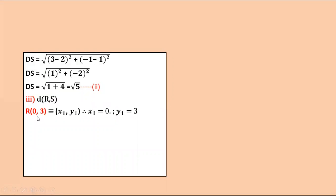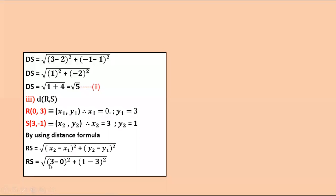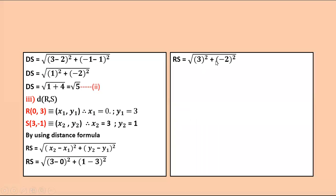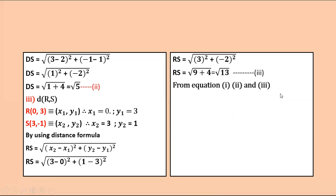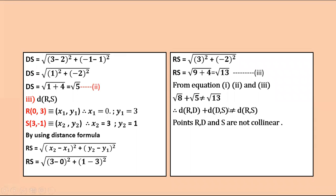To find distance RS: R(0, 3) as x1, y1 and S(3, −1) as x2, y2. RS = √[(3−0)² + (−1−3)²] = √[9 + (−2)²]. RS = √[9 + 4] = √13, equation number 3. From equations 1, 2, and 3, the largest distance is √13, and √8 + √5 ≠ √13. Therefore RD + DS ≠ RS, so points R, D, and S are not collinear.